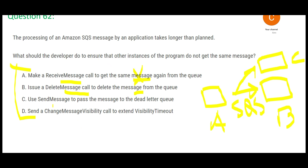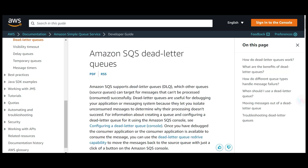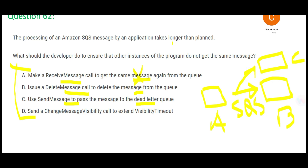Option C says 'send message' to a dead letter queue. There is a send message method, for sure. But the dead letter queue is only used when a message cannot be processed. The question is saying processing is taking longer than planned — it is not saying the message did not get processed.